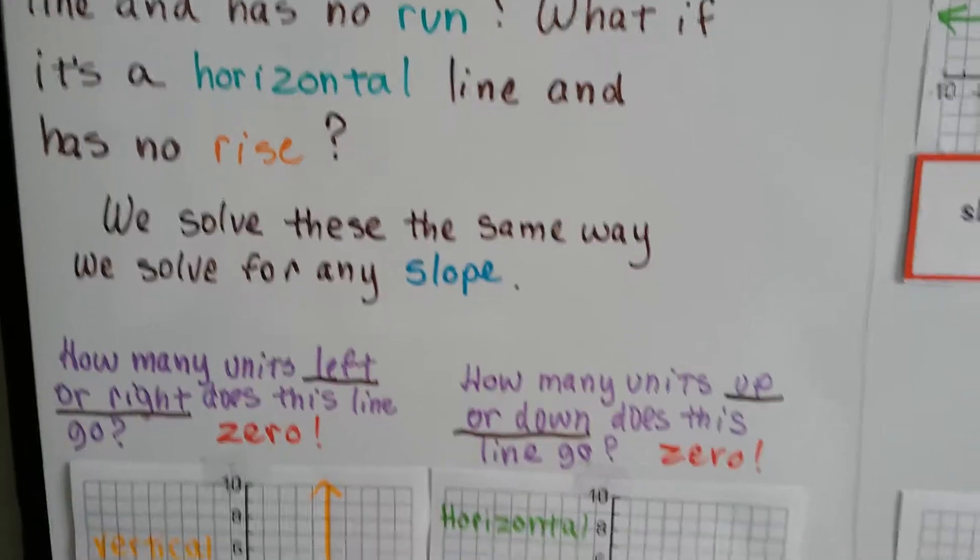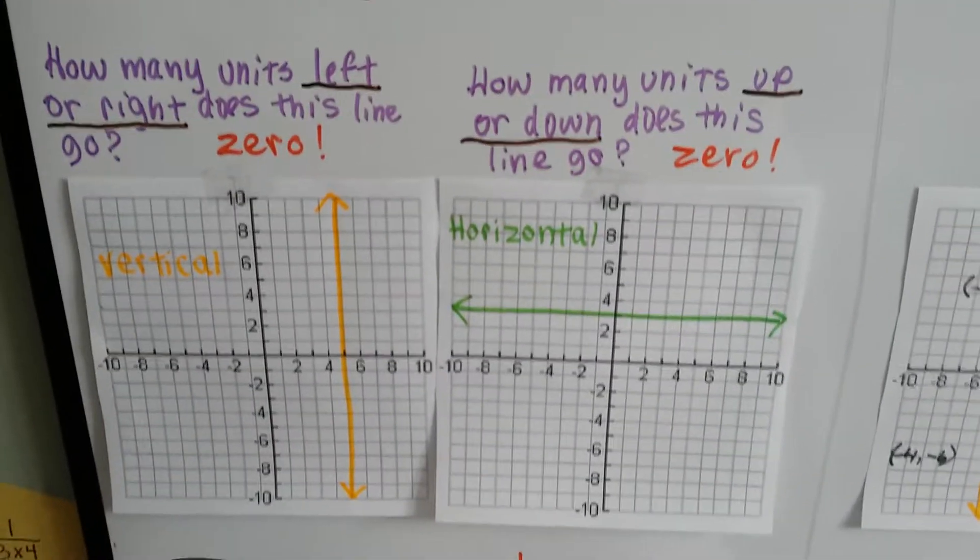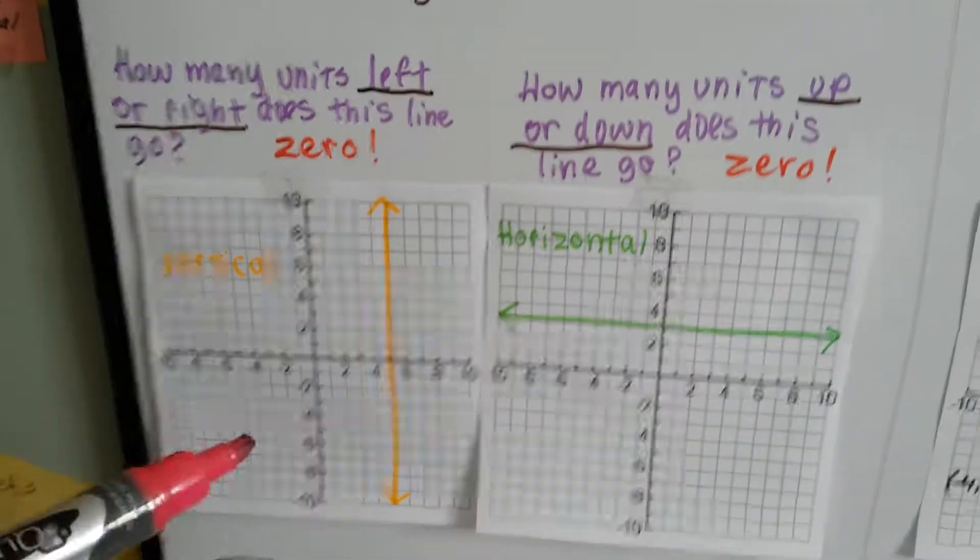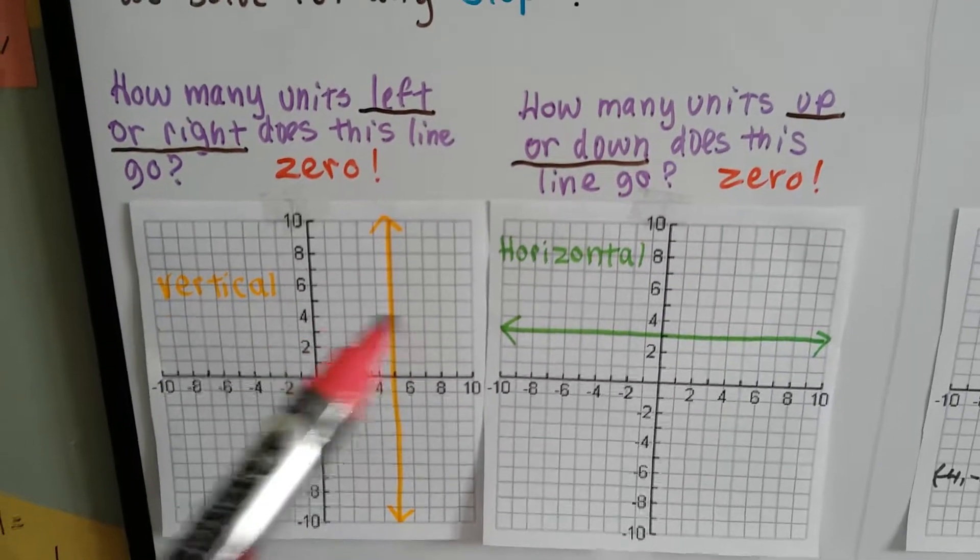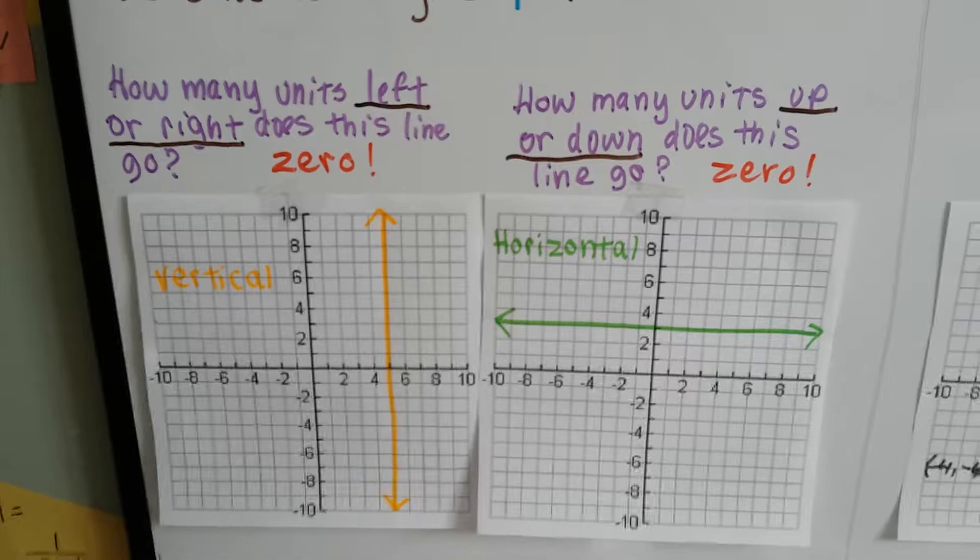We solve these the same way we solve for any slope. Take a look at these two. This orange vertical line, how many units left or right does this line go? It doesn't move left or right at all. It's zero.